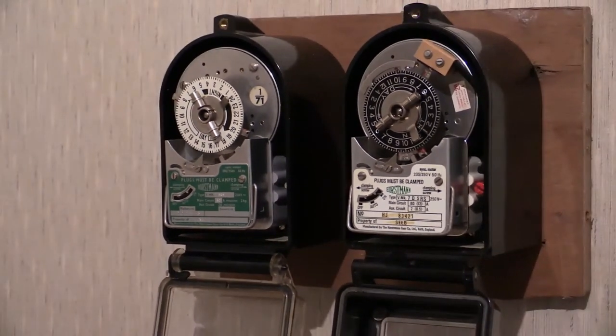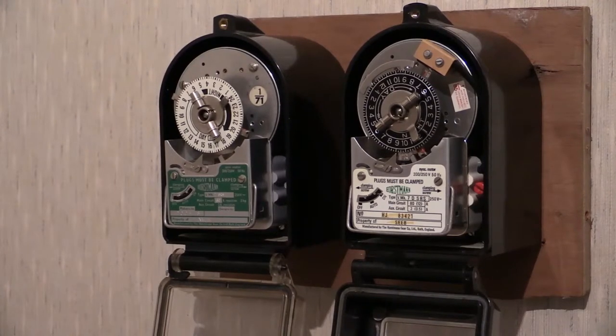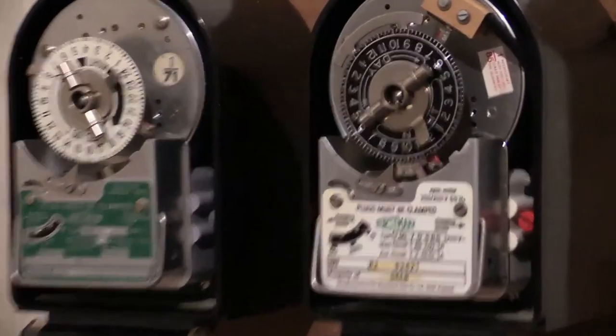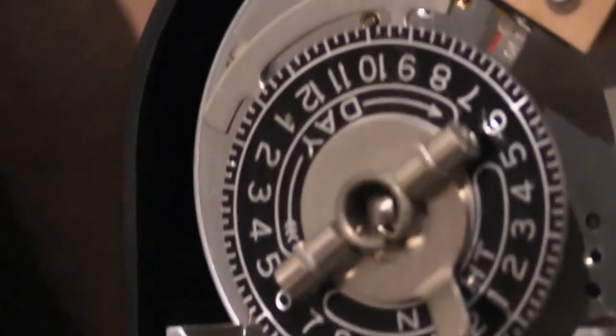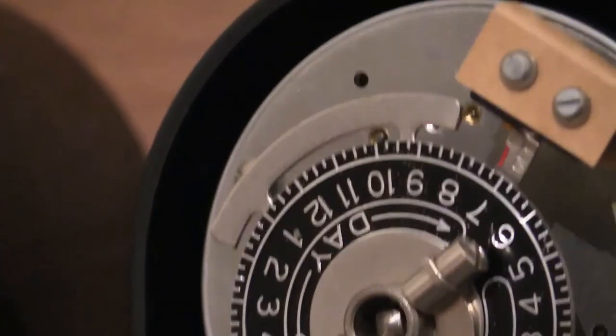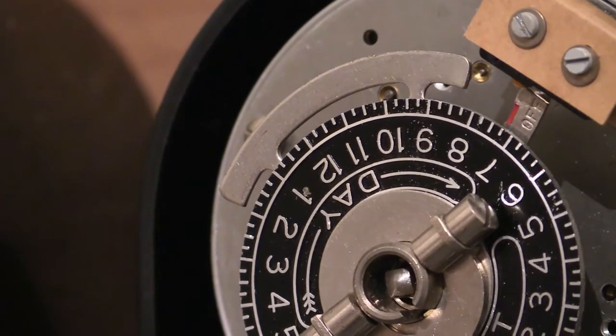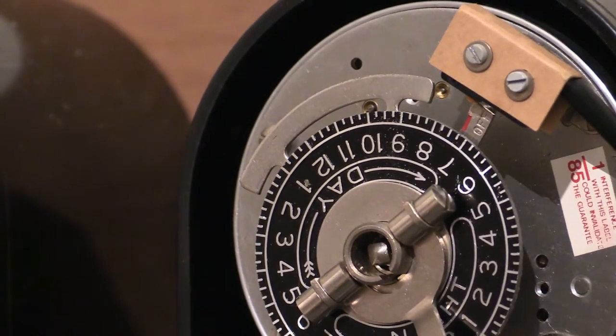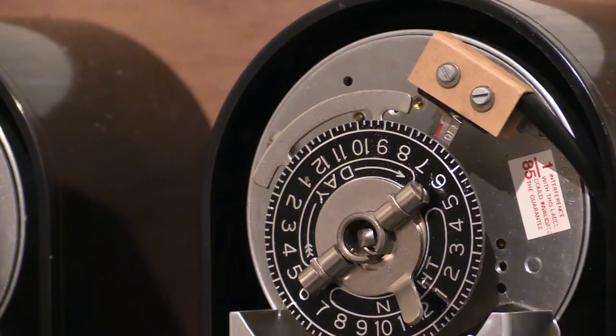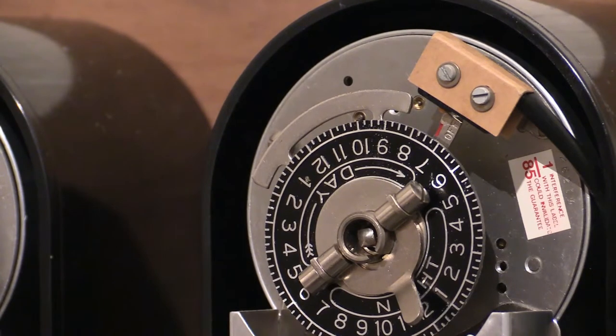So there we are, that is the Horstmann 7D SRS and how it differs from a standard 7SRS. It's all to do with that little bridge which is on the time switch face there, the clock face, and it comes around and interacts with that added on micro switch. Therefore it can be set up in such a fashion that it operates a certain amount of hours before the off-peak loads turn on.